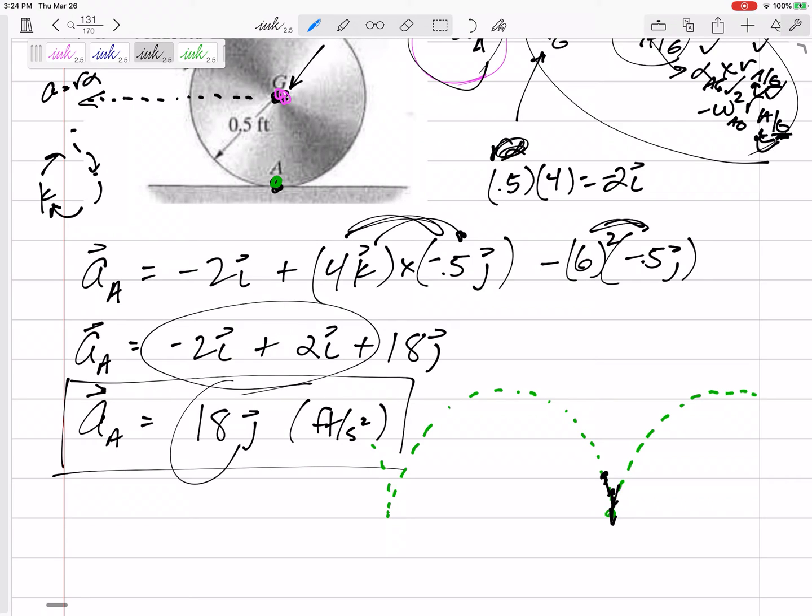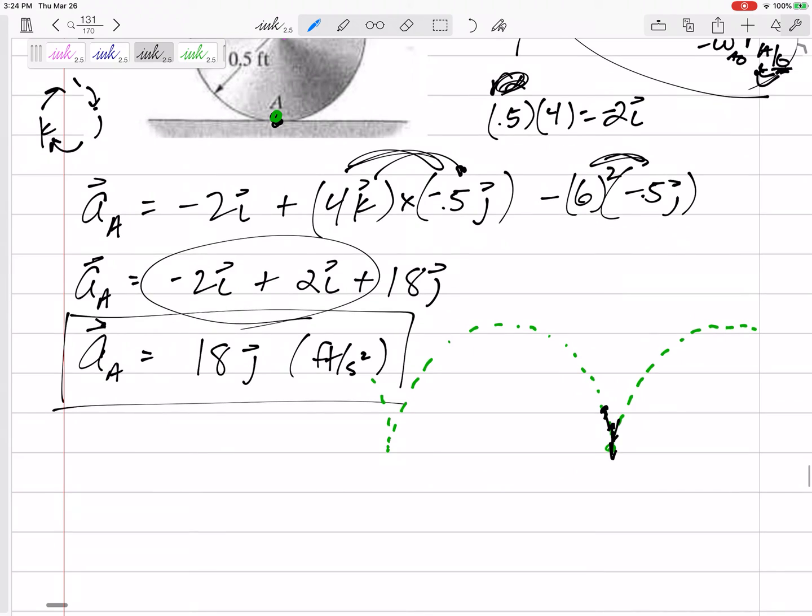All right, what about this 18? Where did that come from? Well, it came from r omega squared. This is almost, it's not exactly, but this is almost kind of like a normal acceleration.